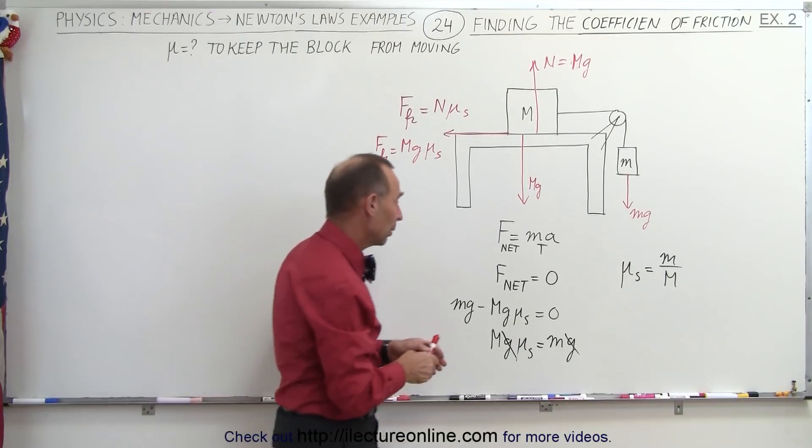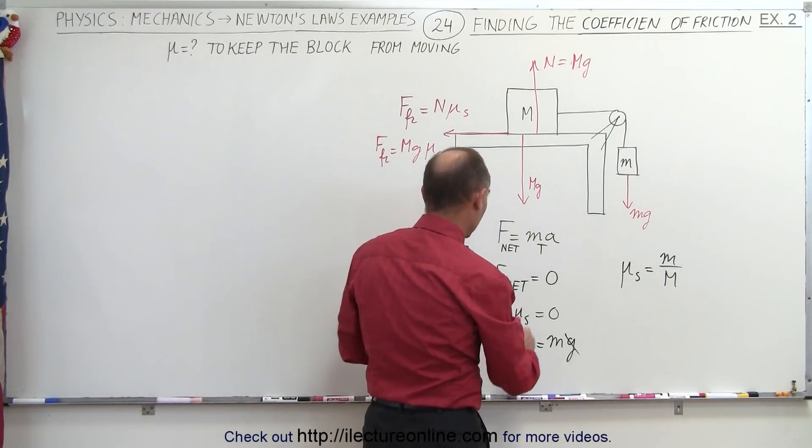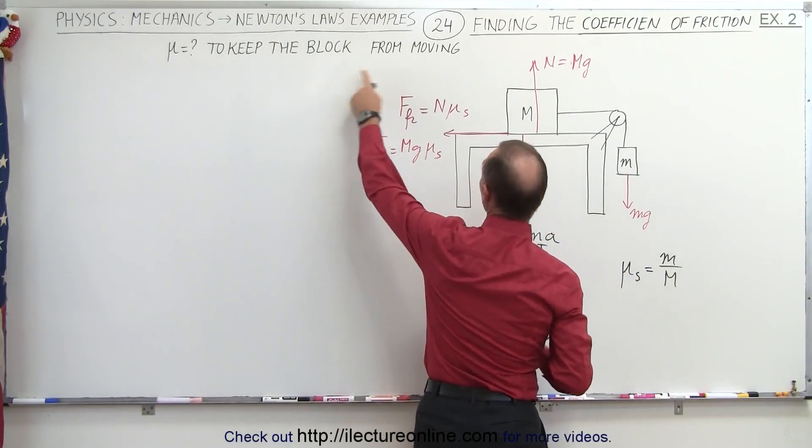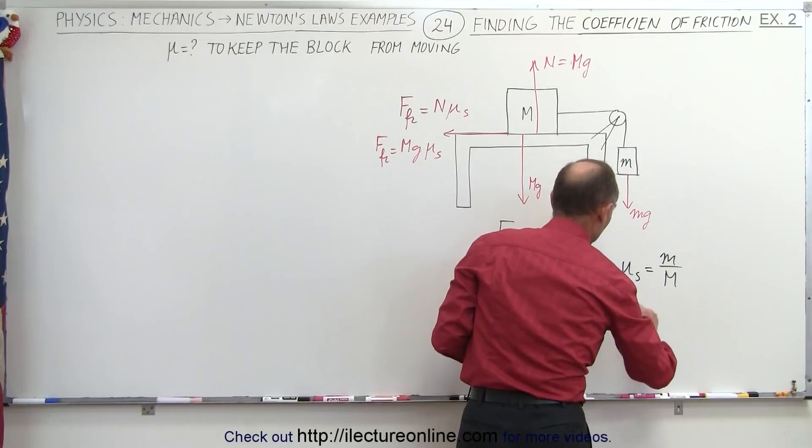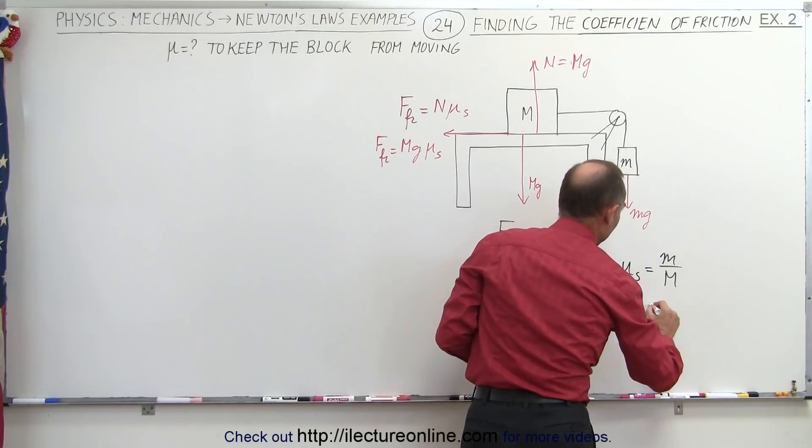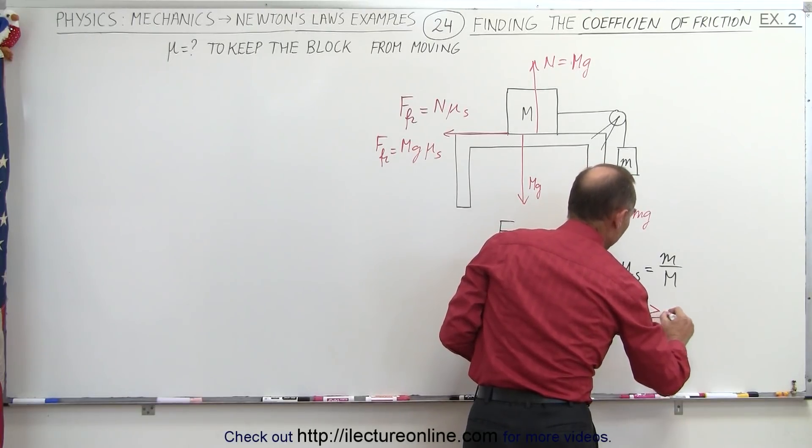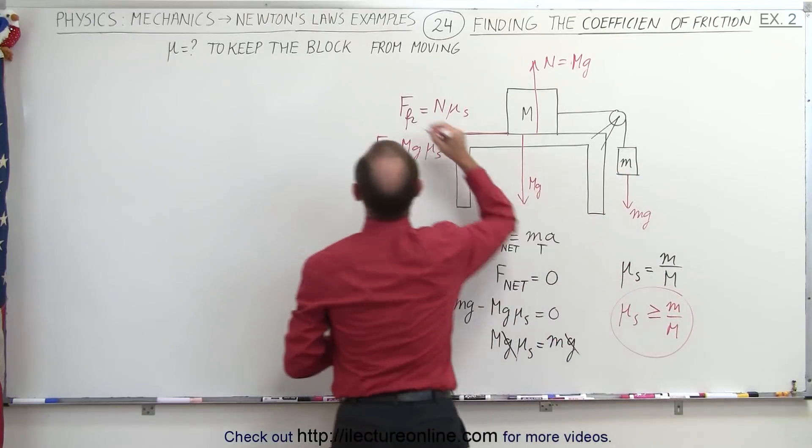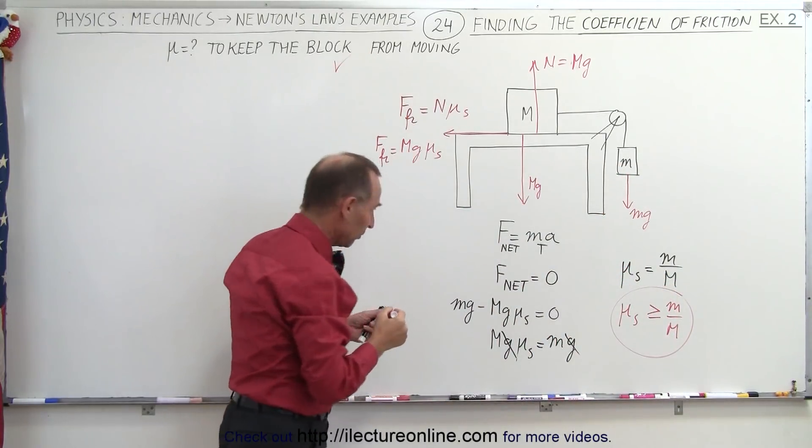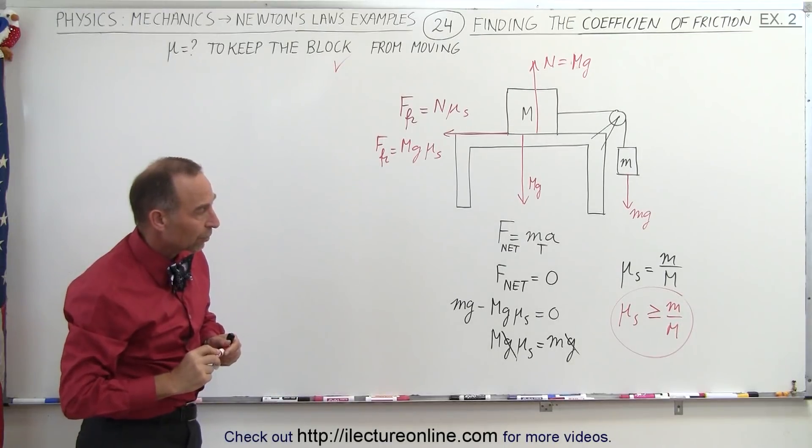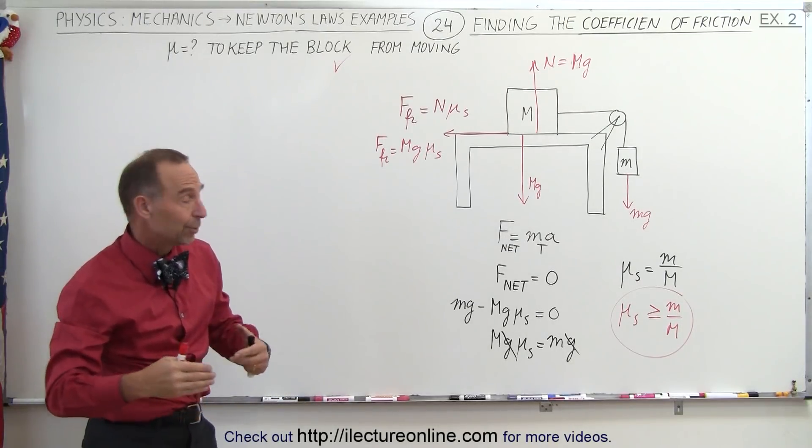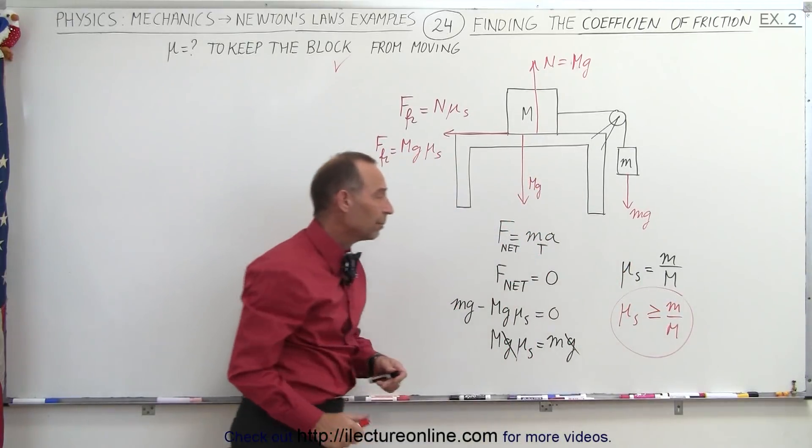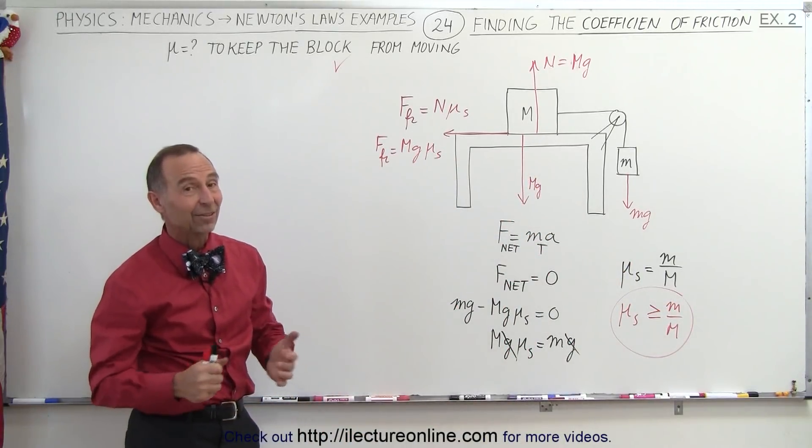And maybe what we should say here is that is the limiting case, so in other words, to keep the block from moving we can say that Mu sub s should be greater than or equal to M divided by big M. And that then answers the question: what's the minimum coefficient of static friction required to keep the system from moving? It must be at least, if not bigger than, the ratio of small M over big M. That's how it's done.